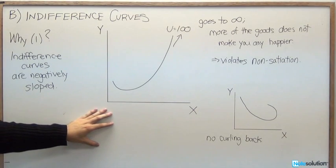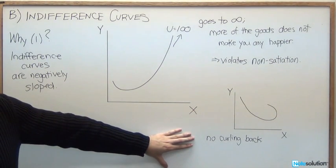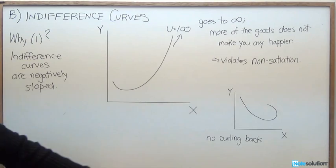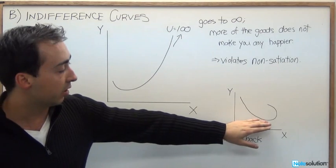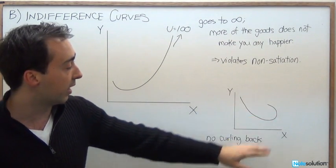Now, what that also means is there's not going to be any curling back here of the indifference curves. Notice here along this point, we've got a negatively sloping indifference curve. But here, it's going to be positively sloping again.